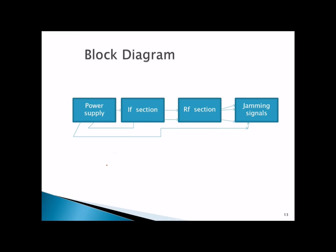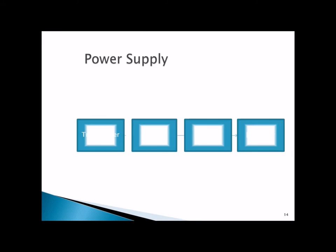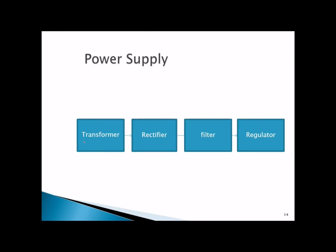This is the basic block diagram of a mobile jammer. It consists of a power supply section, an IF section, an RF section, and these produce the jamming signals. The power supply includes a transformer, rectifier, filter, and regulator.